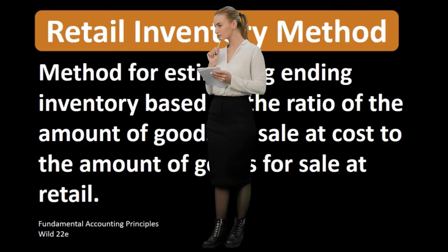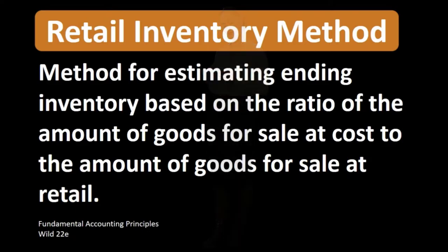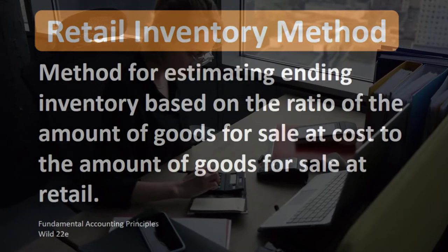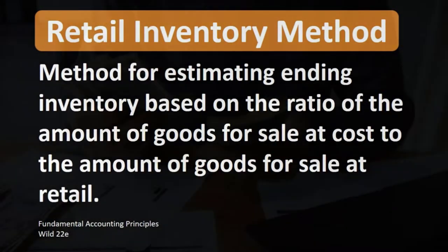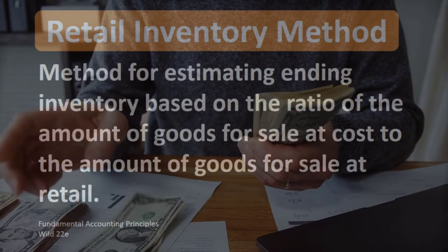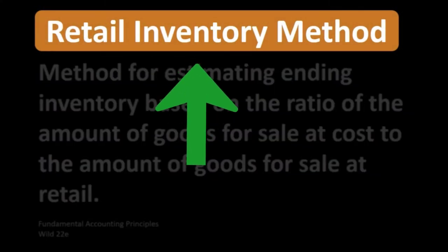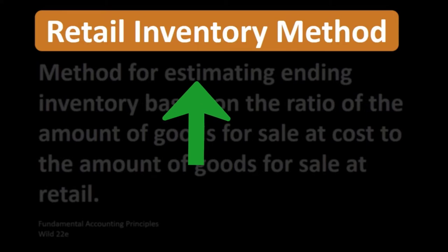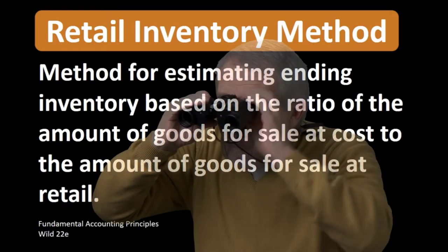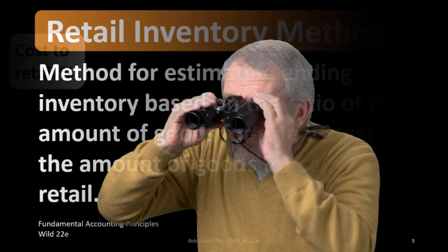So remember what the goal is here — we're trying to estimate what the ending inventory is, either because we have not yet done a physical count, or possibly because we're going to do a physical count and we want to compare our estimate with the physical count to look for items such as shrinkage, spoilage, or things like that. So in order to do this, let's take a look at an example.